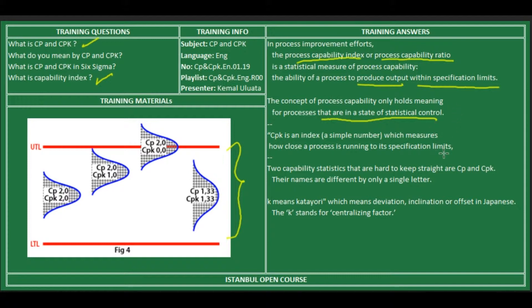CPK is an index which measures how close a process is running to its specification limits.